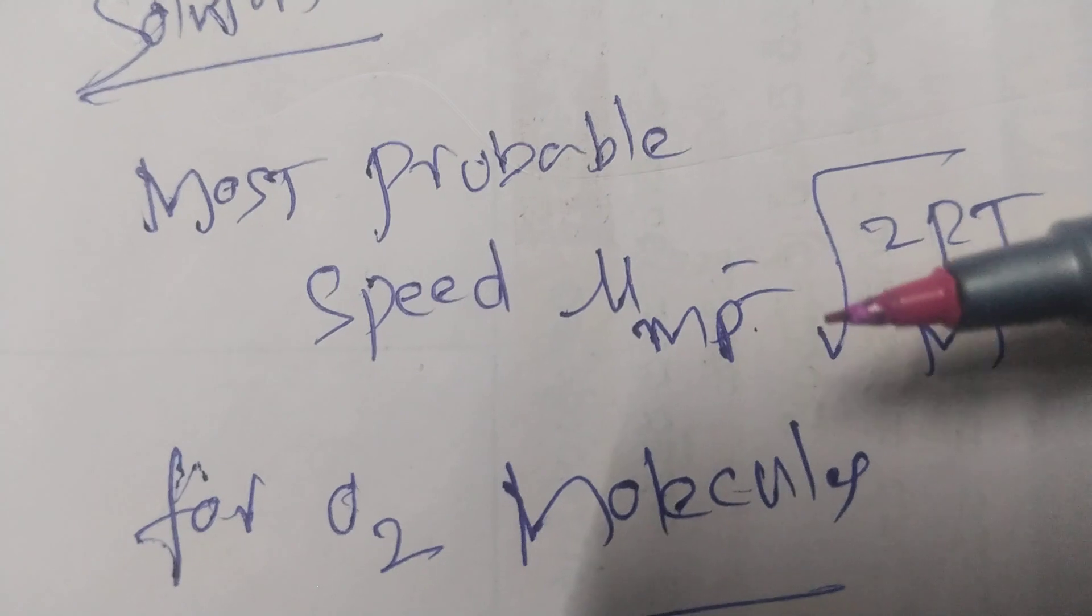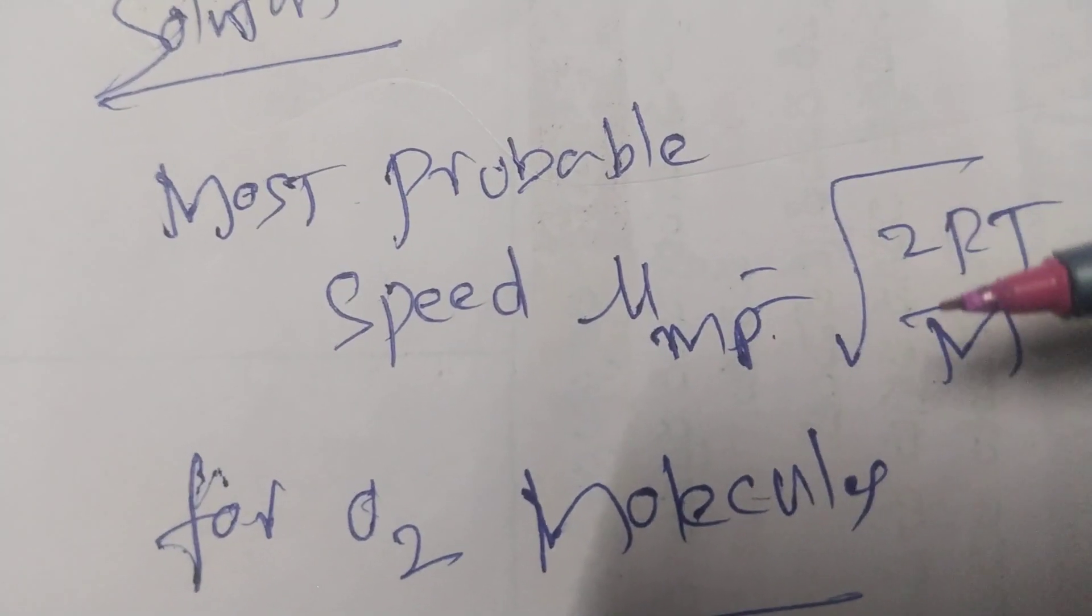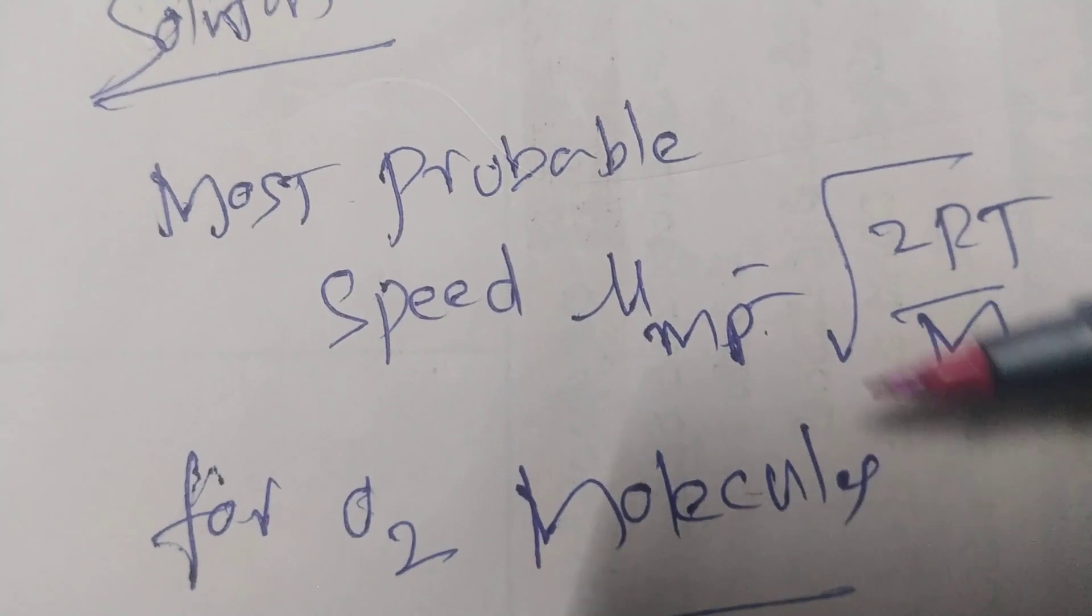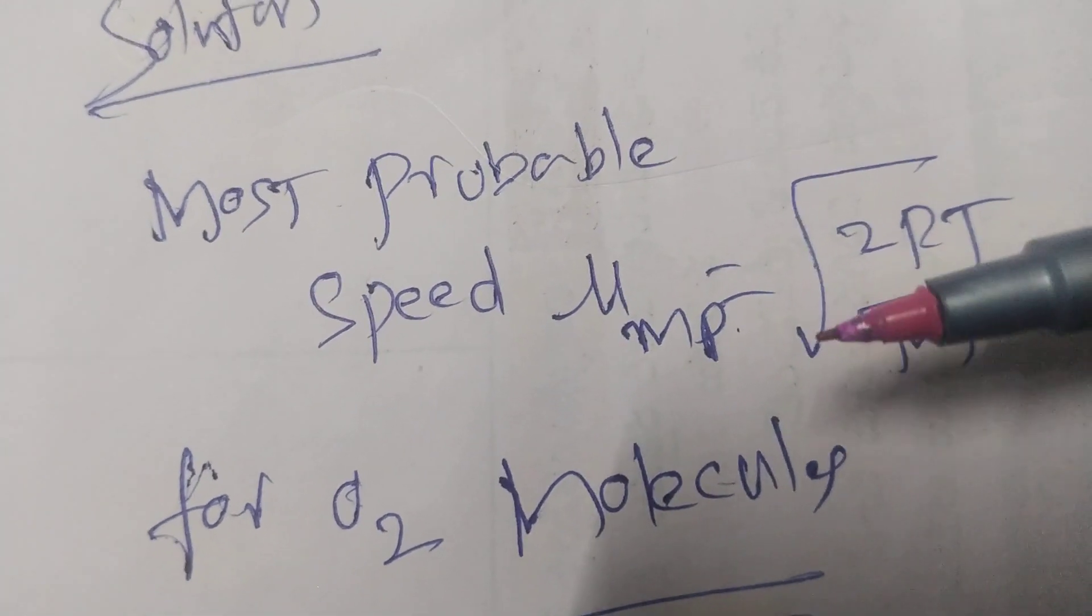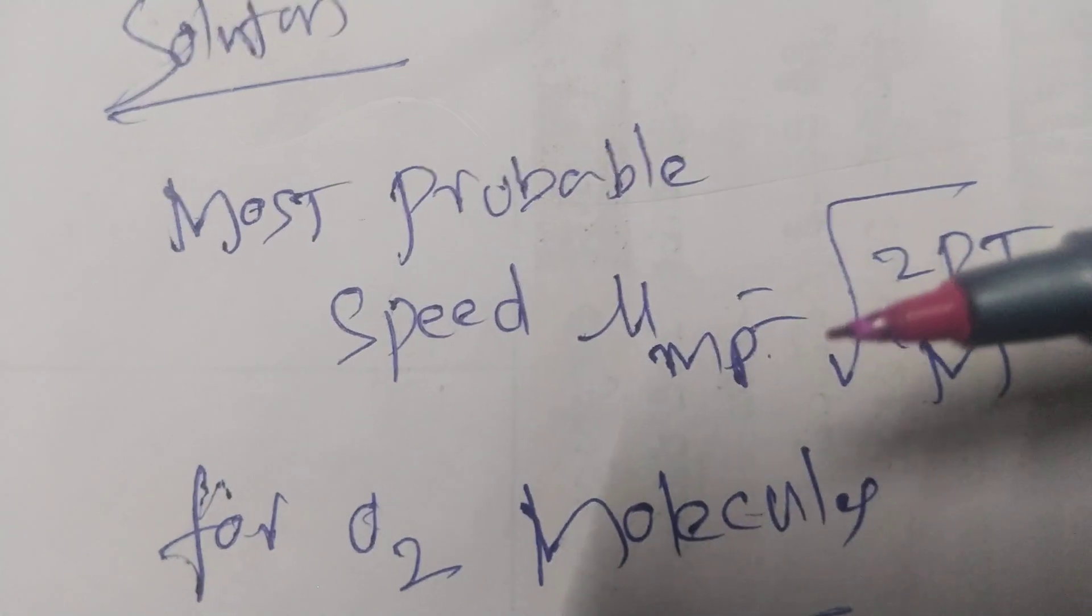Average velocity, square root of 8RT by 5M is the formula for average velocity.